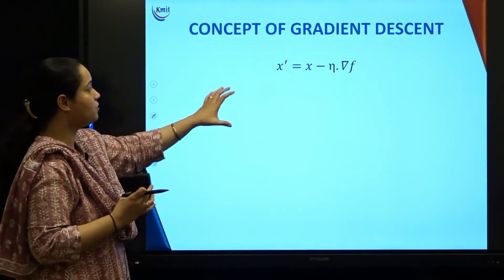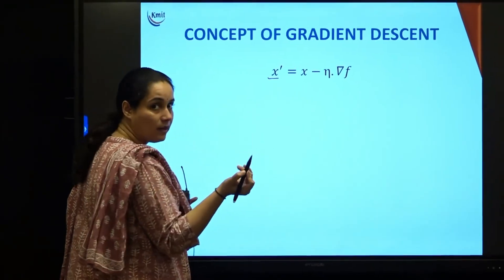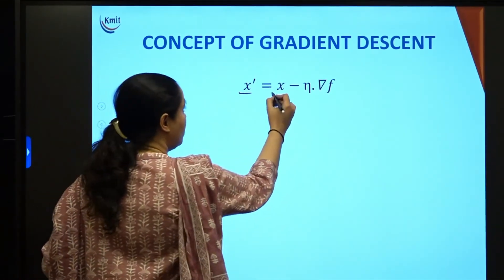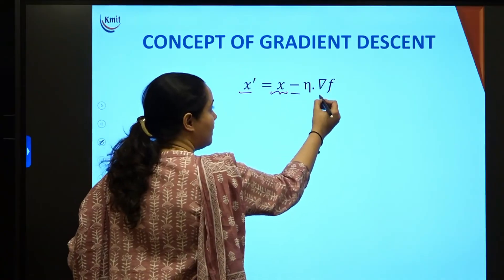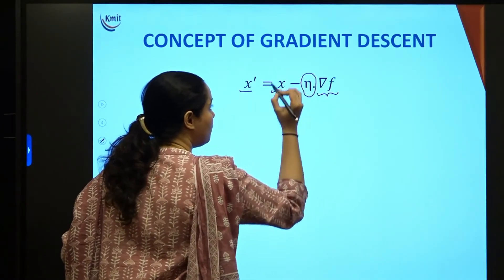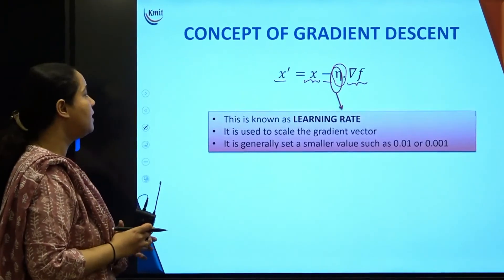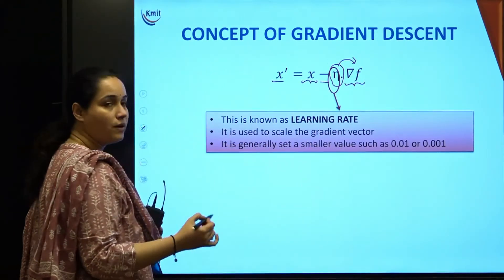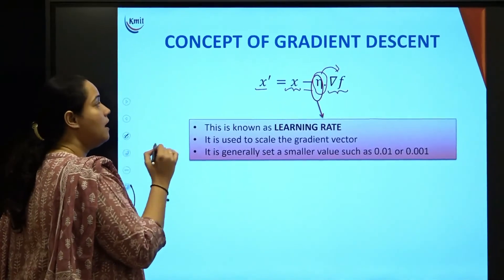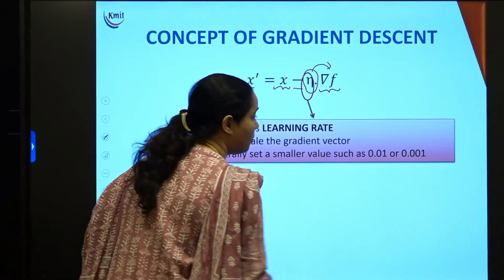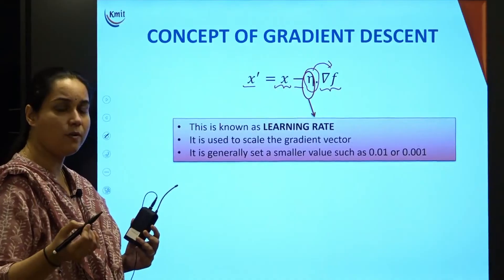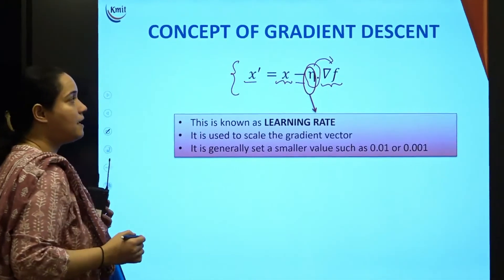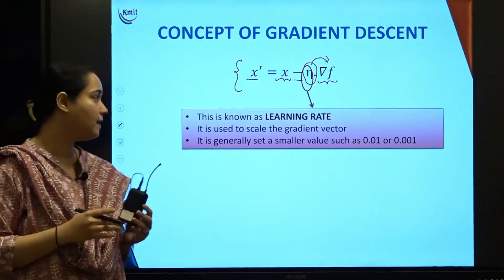The parameter x' is updated every time from its previous value by subtracting the gradient. There is one more term: η, which we call the learning rate. Eta is a scaling factor of your gradient vector, always set to a small value around 0.01 or 0.001. You will learn more about this in back propagation. For now, understand that this mathematical equation is how we update our parameters using gradient descent.